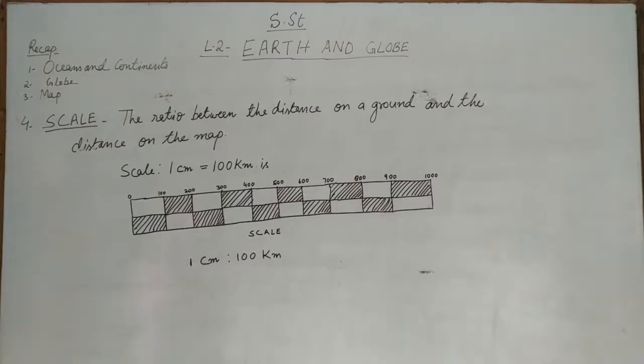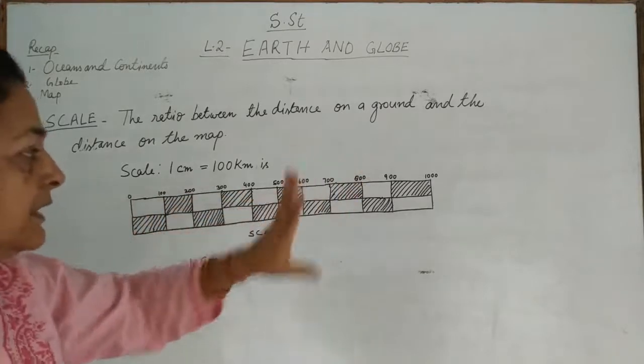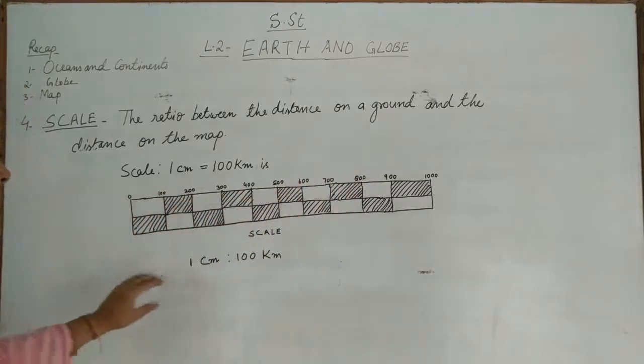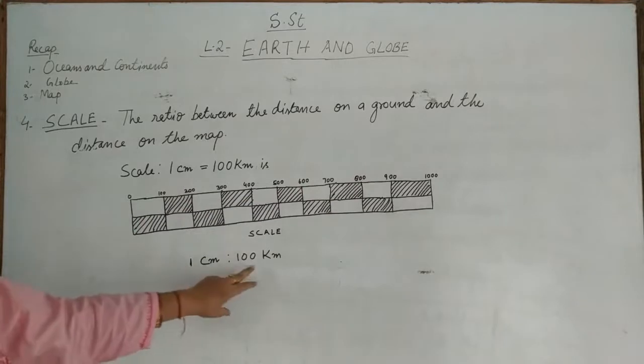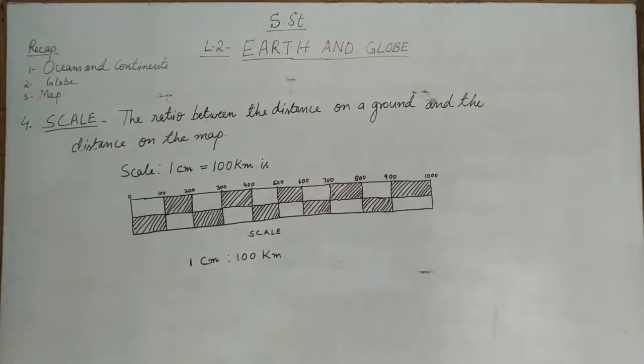We measure the distance like this: if one centimeter is equal to hundred kilometers, if we have to show a distance of 100 kilometers, then we show one centimeter. One centimeter is 100 kilometers, two centimeters is 200, three is 300, and four is 400. This is how we use the scale. If this place is 100 kilometers, then we show one centimeter.